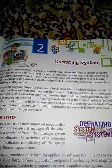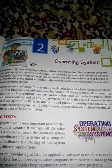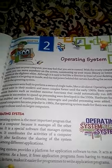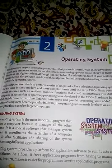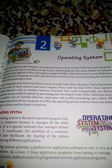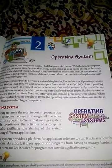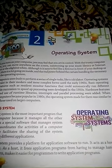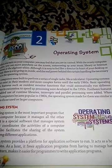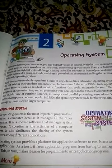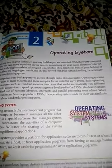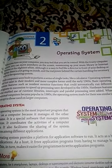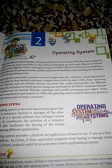Early computers were built to perform a single task, like a calculator. Operating systems did not exist in their modern and more complex form until the early 1960s. Basic operating system features, such as resident monitor functions that could automatically run different programs in succession to speed up processing, were developed in the 1950s.